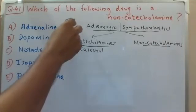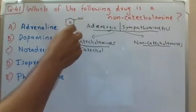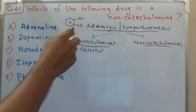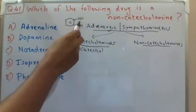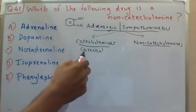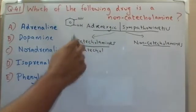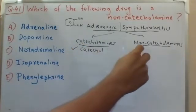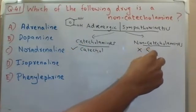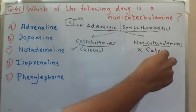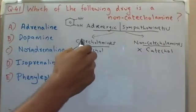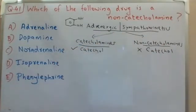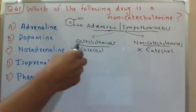Catechol is a benzene ring with two hydroxyl groups at the first and second positions. If a benzene ring has two nearby hydroxyl groups, that structure is called catechol. Catecholamines contain this catechol nucleus, whereas non-catecholamines do not contain this catechol nucleus.